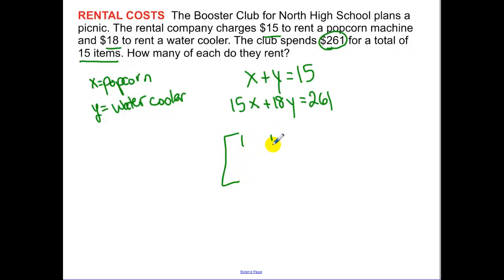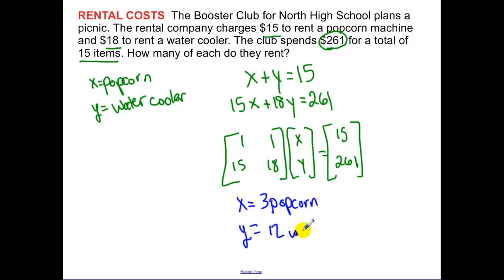Now using your inverse matrices to solve that, write your matrix equation. Now going through, and I'm not going to show the calculator again, but going through and solving with your calculator, you end up getting X to equal 3 popcorn machines and Y ends up equaling 12 water coolers. And I might check and make sure you get that same thing that I got on your calculator.